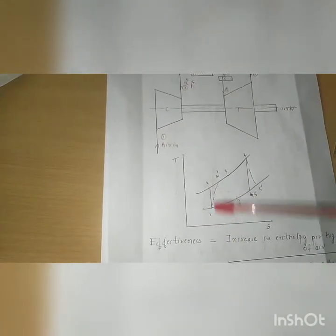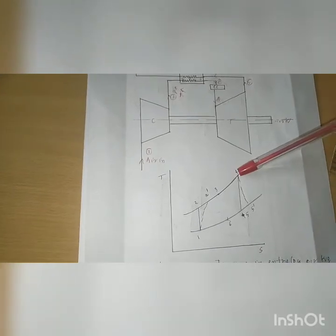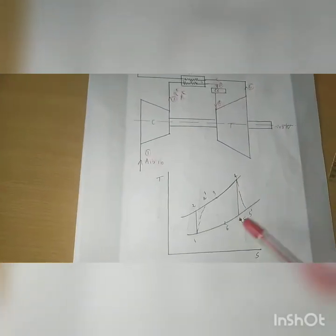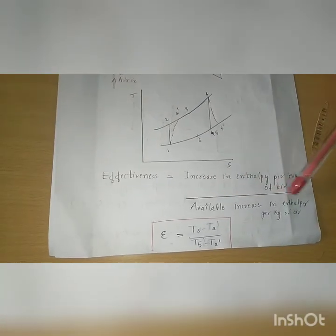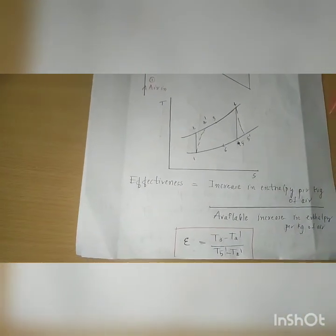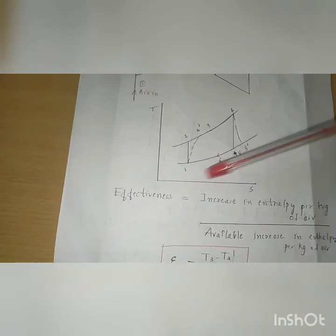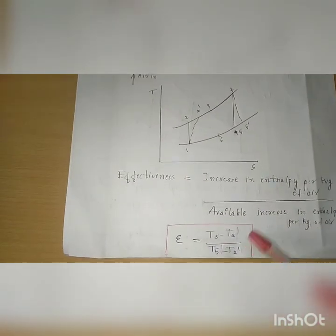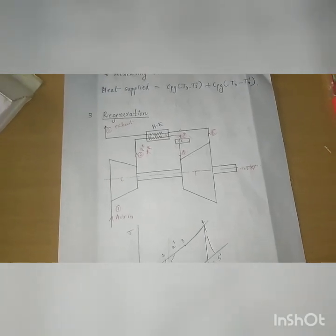In the T-S diagram for regeneration: 1 to 2 dash is actual compression; 2 dash to 4 is heat addition; 4 to 5 dash is turbine expansion; and 5 dash to 6 represents heat extraction in the regenerator. The regeneration effectiveness is defined as the increase in enthalpy per kg of air divided by the available increase in enthalpy per kg of air. The formula is: effectiveness = (T3 − T2 dash) / (T5 dash − T2 dash). These are the three methods to improve the efficiency of open cycle gas turbines in constant pressure classification.